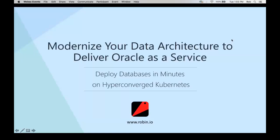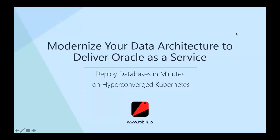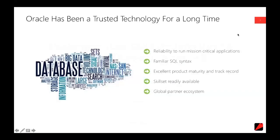What Robin does is solve a lot of the complexity challenges and technological gaps inherent in Kubernetes, with its ability to be viable for stateful apps. Today we're focusing on Oracle, which is just one of many software stacks that Robin can support. Oracle is tried and true, been around forever, a very widely and deeply trusted technology — very well proven with its ability to support mission-critical apps.